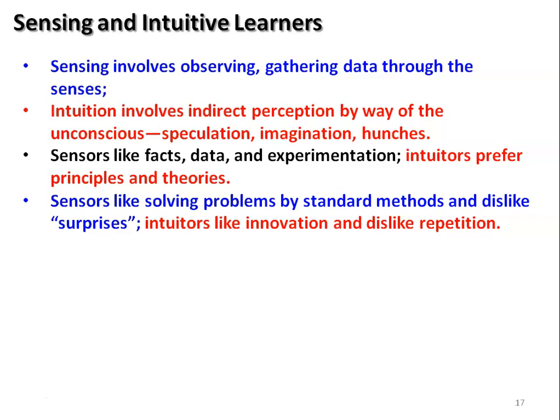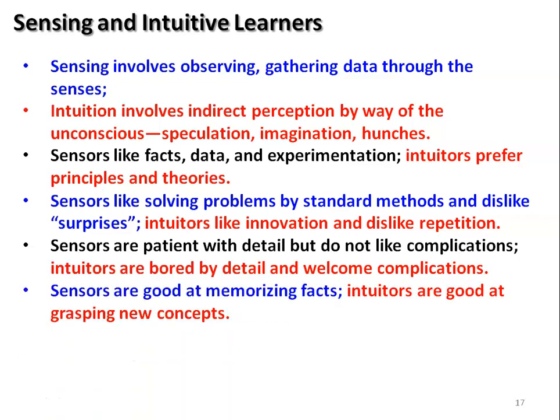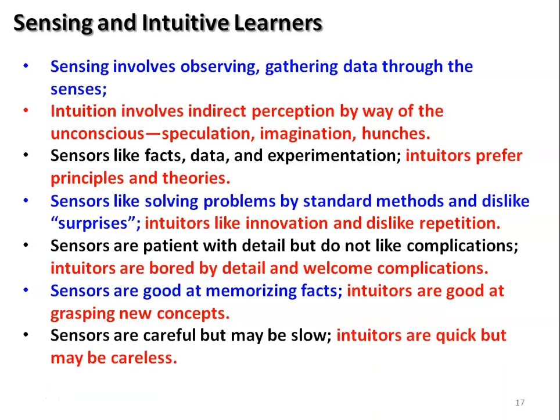Sensing students are patient with details but do not like complications. Intuitive students like innovation and dislike repetition; they are bored with details but welcome complications. Sensors are good at memorizing facts, while intuitive learners are good at grasping new concepts. Sensing type students are careful but may be slow; intuitive type students are quick but may be careless.